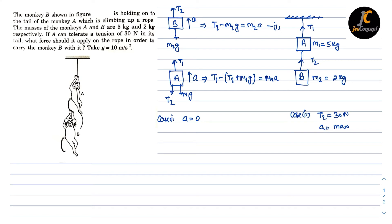In case one, acceleration a equals zero. From equation one: T2 minus M2g equals zero, so T2 equals M2g. With M2 = 2 kg and g = 10, T2 equals 20 newtons.